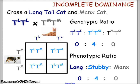The genotypic ratio for this cross is: homozygous long (TL TL) = 0, heterozygous stubby (TL TM) = 4, homozygous Manx (TM TM) = 0 — a genotypic ratio of 0:4:0. The phenotypic ratio of long to stubby to Manx is also 0:4:0, with the heterozygous stubby phenotype in the middle.